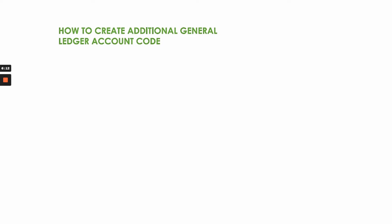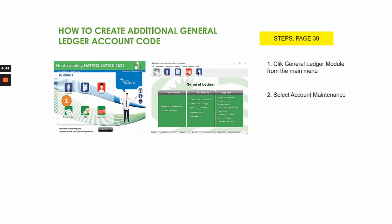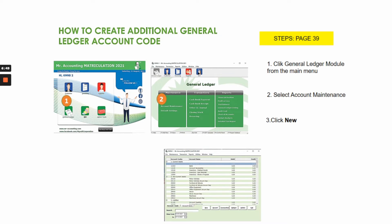Now, how do you create additional general ledger account codes? This is needed when the account name is not provided in the account maintenance. There are a few steps to follow. Step one: click the general ledger module. Step two: select account maintenance.